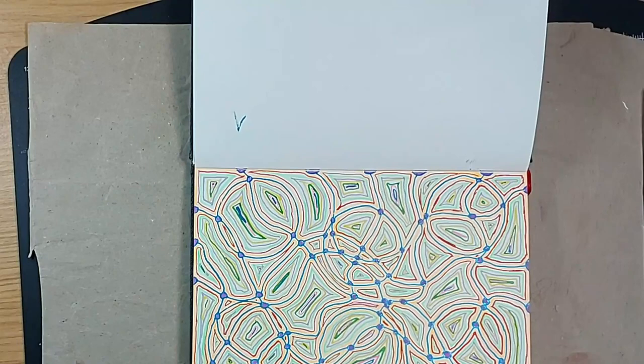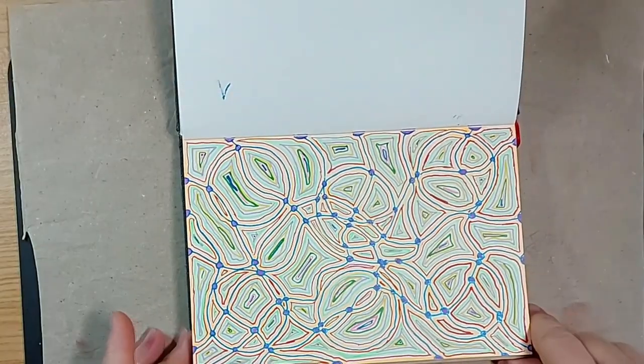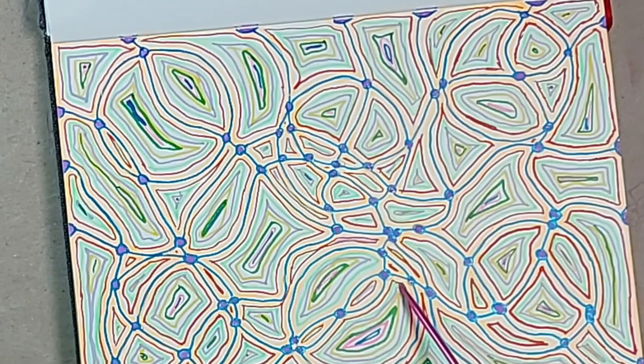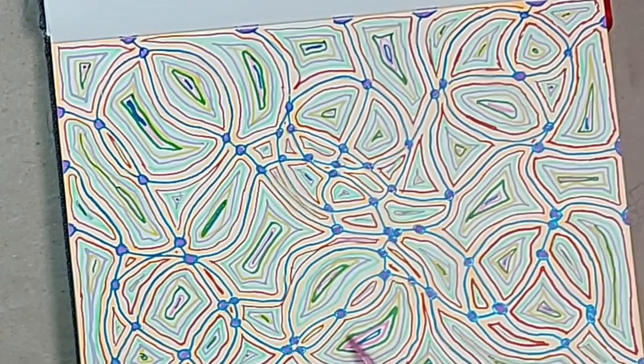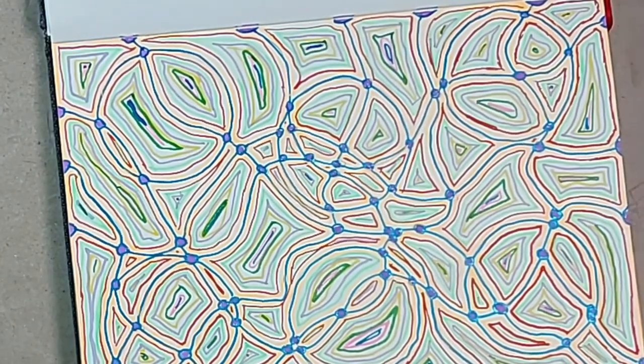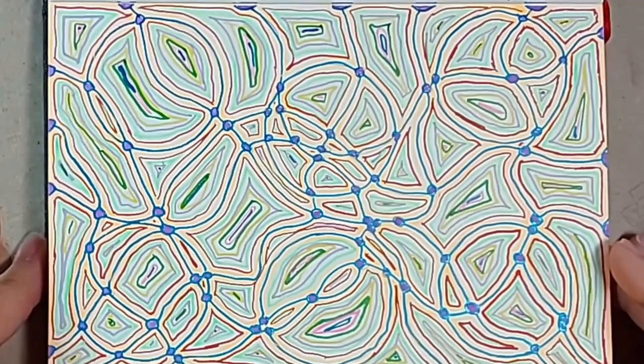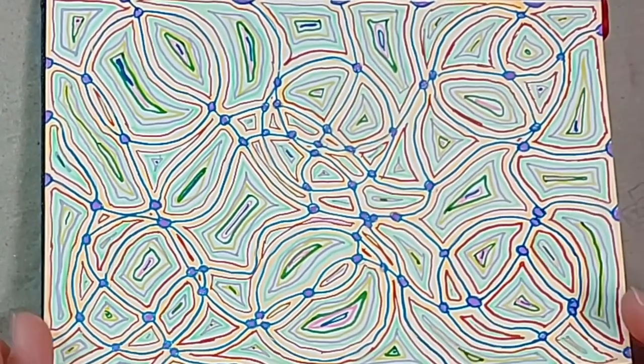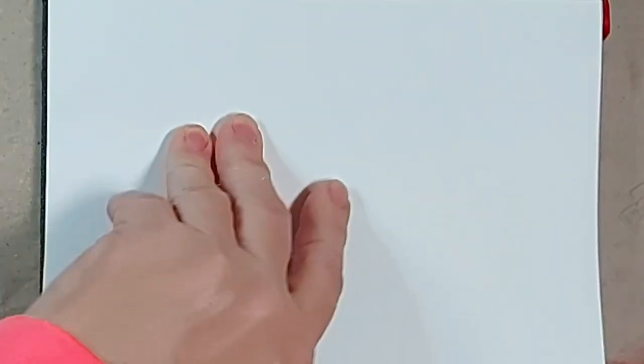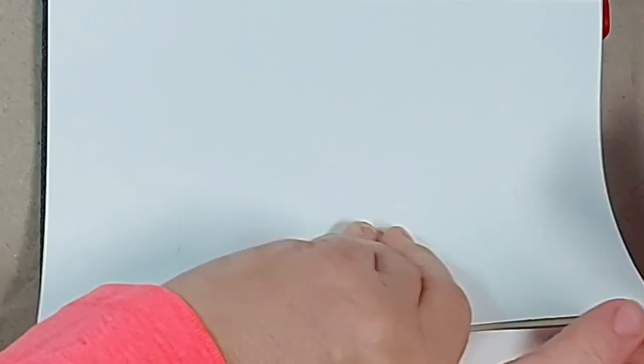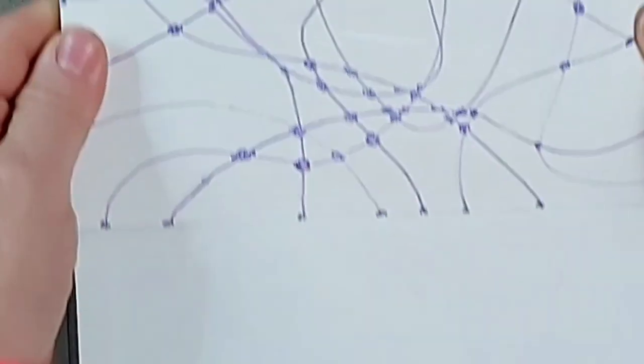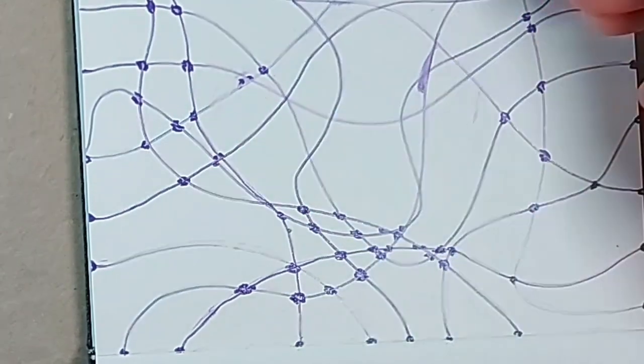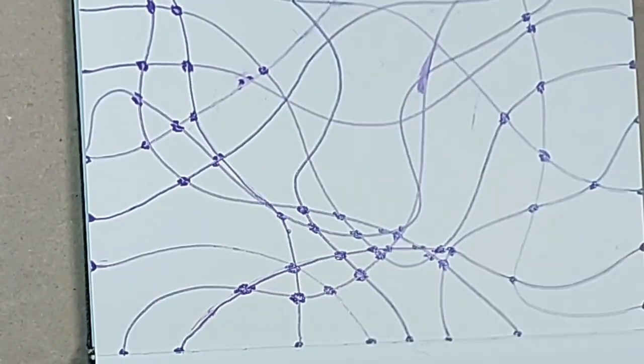This is completely different but the same technique. What I've done here instead is I've literally gone around the outside of each of my little cells, each time consecutively smaller with different color pens. To me this looks like some sort of road map.